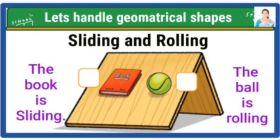The ball is rolling. Those objects having curved surfaces, that object rolls down. Those objects having flat and curved both surfaces, that object can slide down as well as roll down.